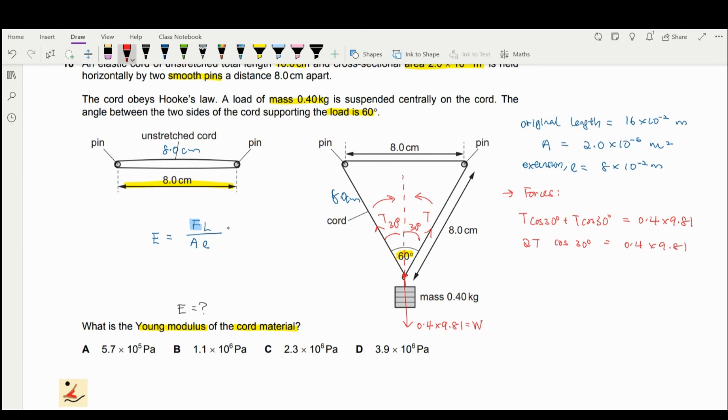So your T should be equal to 0.4 times 9.81 divided by 2 cosine 30 to give you 2.266 newtons. So this T here is the force acting on the cord here.